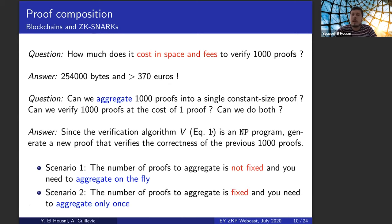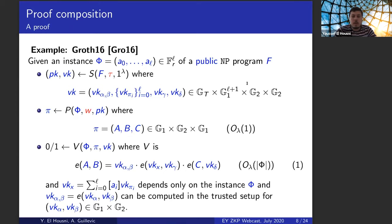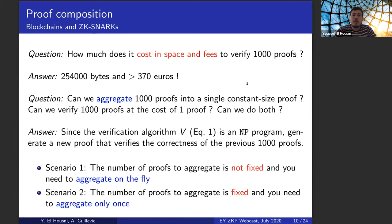So since we are talking about ZK-SNARKs of NP language, then equation one, which is this one in this slide, is also an NP program. So one can generate a proof, a new proof that verifies the correctness of the previous proof or say many other proofs. Maybe we will have two scenarios. One is when we have the number of proofs is not fixed. So we need to aggregate on the fly or maybe the number of proofs is fixed and then maybe we can just aggregate once.